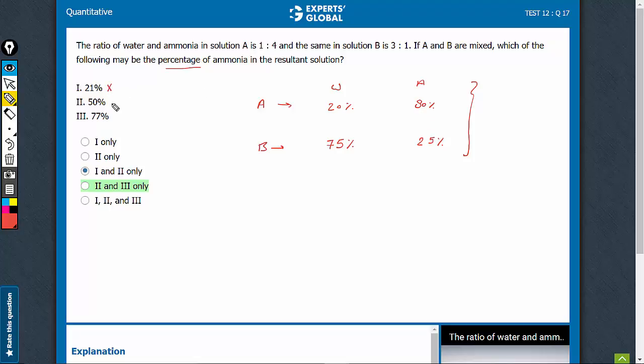21 therefore is not possible, 50 is possible, 77 is possible and therefore D is the best answer choice.